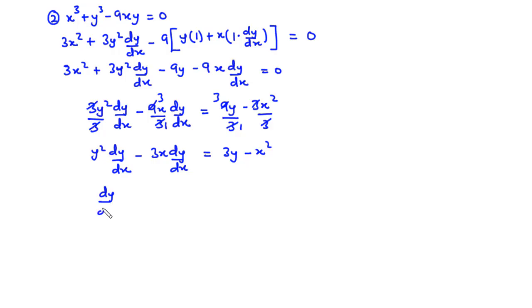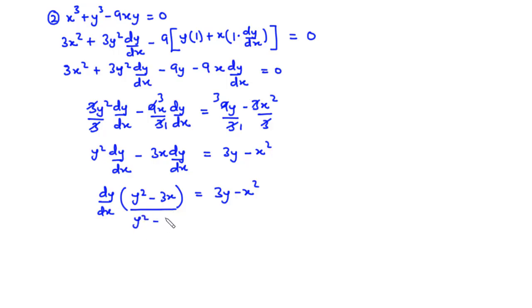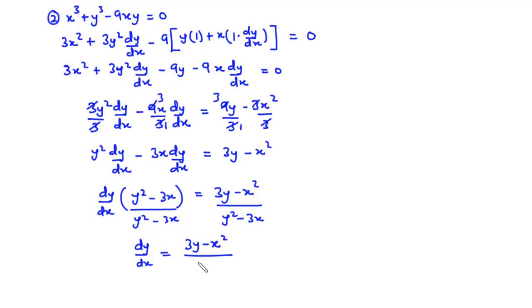Factoring out dy/dx on the left-hand side: dy/dx times (y squared minus 3x) equals 3y minus x squared. Dividing through by (y squared minus 3x), we get dy/dx equals (3y minus x squared) divided by (y squared minus 3x).